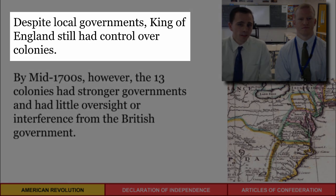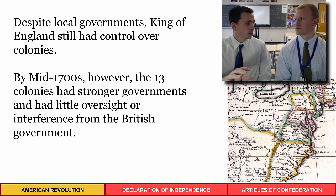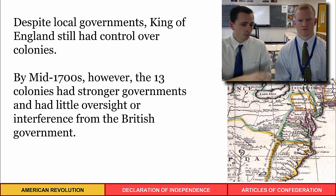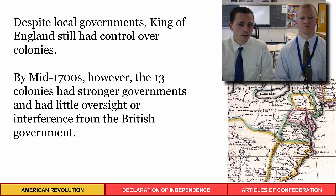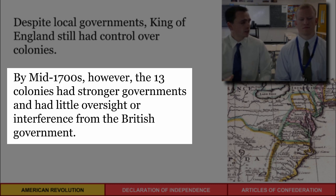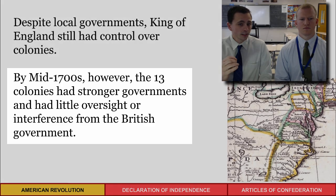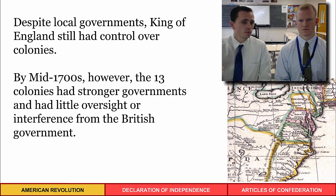Despite these local governments, the king still had control — the colonies were not independent sovereign states. Other countries like the Netherlands, Spain, and France were also jockeying for position, but the original thirteen colonies were governed by Great Britain. By the mid-1700s, these colonies started establishing stronger governments, getting less oversight from Britain, and thinking of themselves more as members of their colony than of Great Britain.